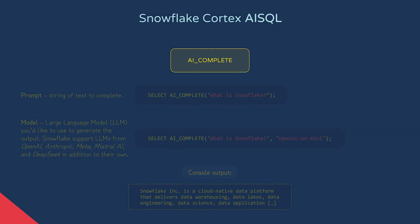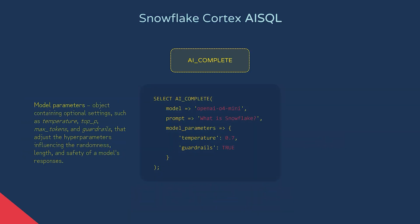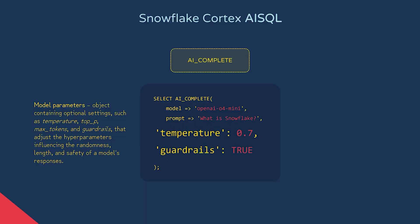There are also model parameters we can add to further control the output, like temperature, which controls the randomness of the output of the model, and guardrails, which is a Snowflake feature that further filters models for potentially harmful responses.